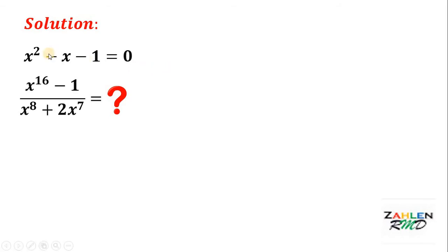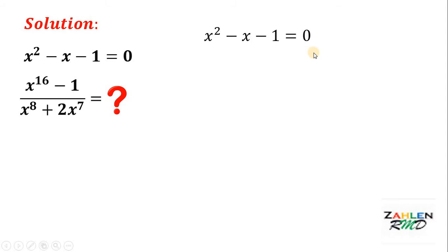We are given the equation x squared minus x minus 1 equals 0. We will use this to evaluate the expression x raised to 16 minus 1, all over x raised to 8 plus 2x raised to 7. Note that x is not equal to 0, because solving this equation gives the golden ratio. We add x and add 1 to both sides, giving us x squared equals x plus 1.